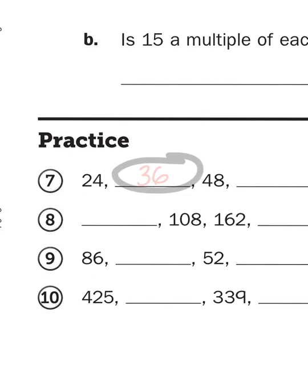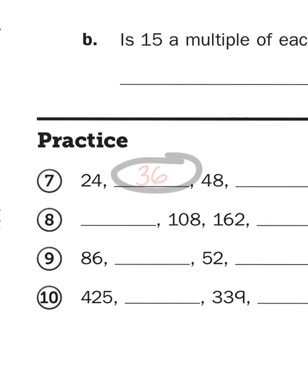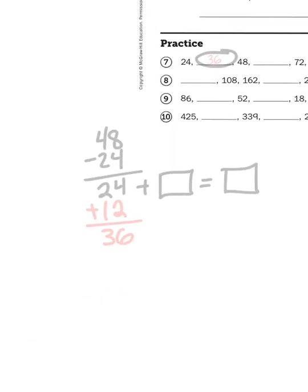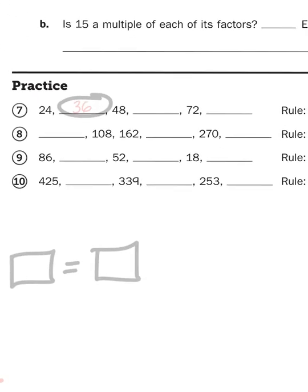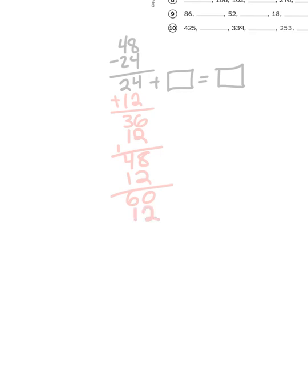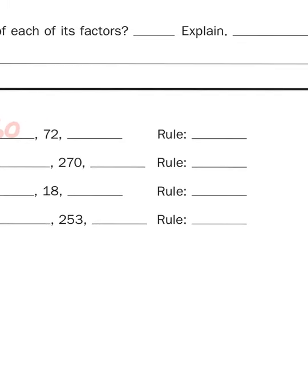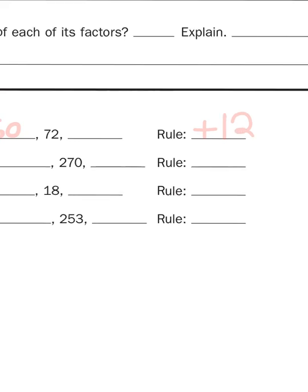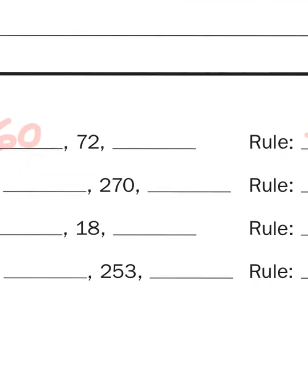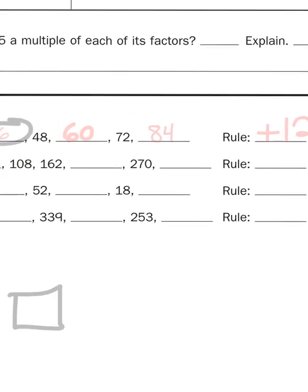Now I can prove that to be true because 24 plus 12 is 36. 36 plus another 12 gives me 48. Now if I add a third 12 to this list here, I'm going to get 60. And then if I add 60 plus 12, well, what do you know, it gives me 72. So I think my rule works. So the rule here is to add 12. And then the last number, 72 plus 12 is going to give me 84.